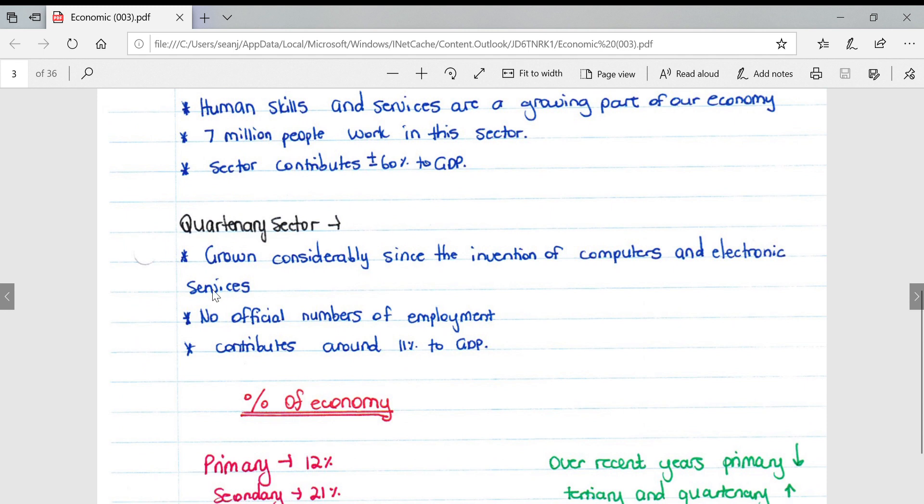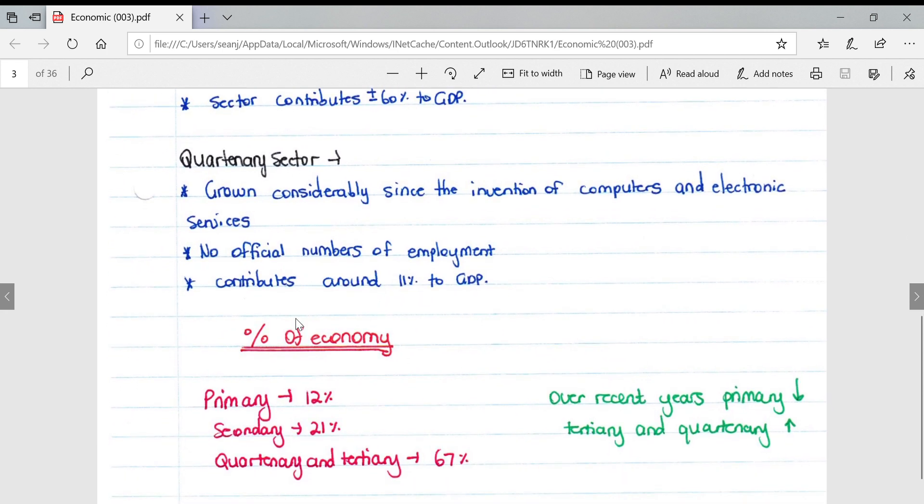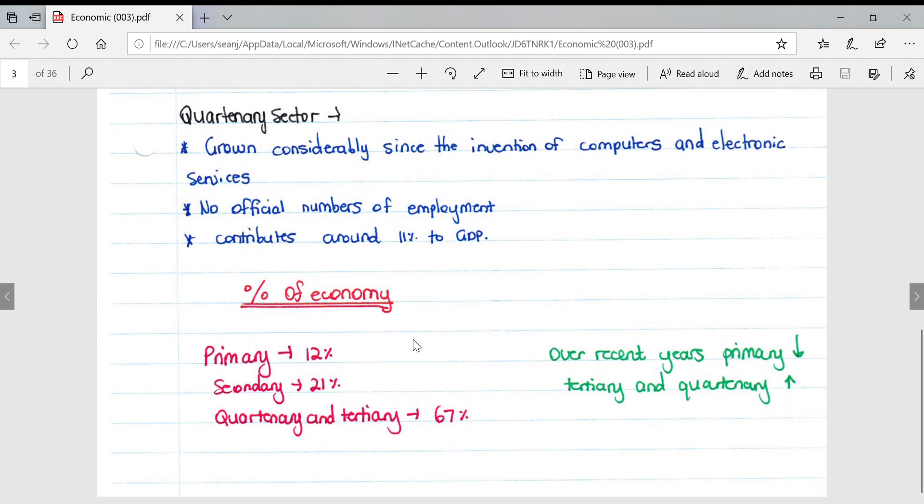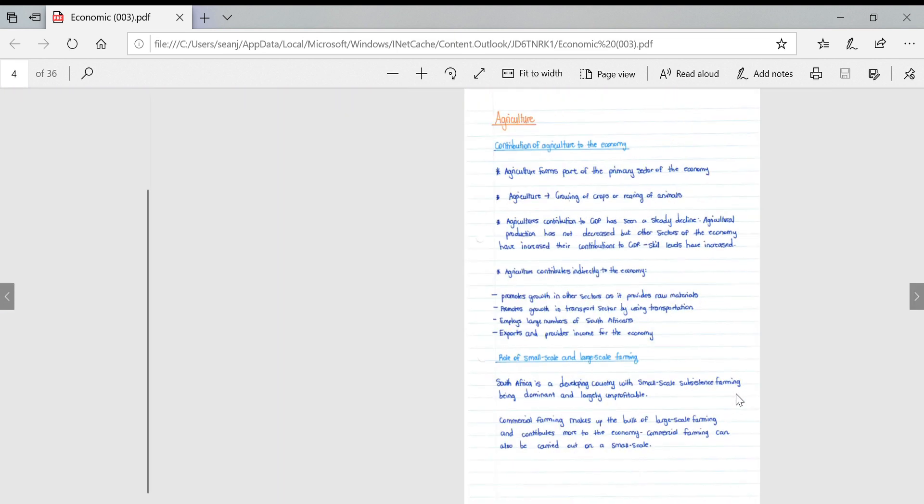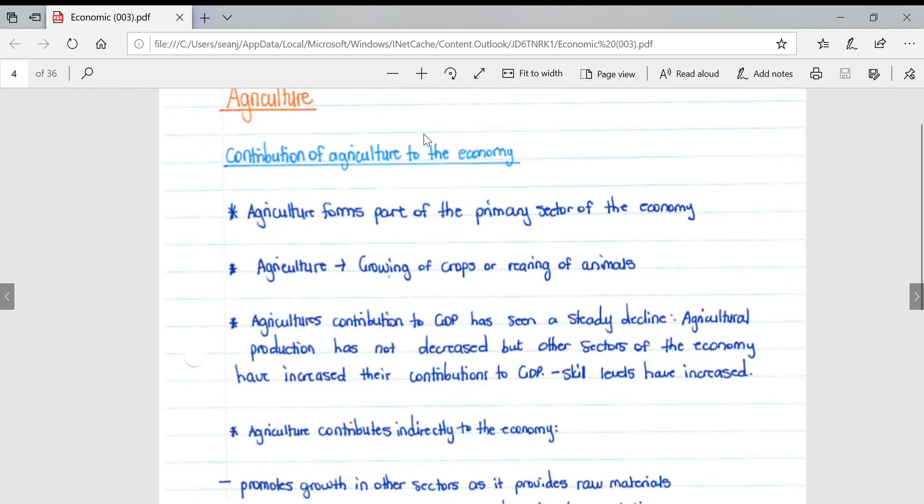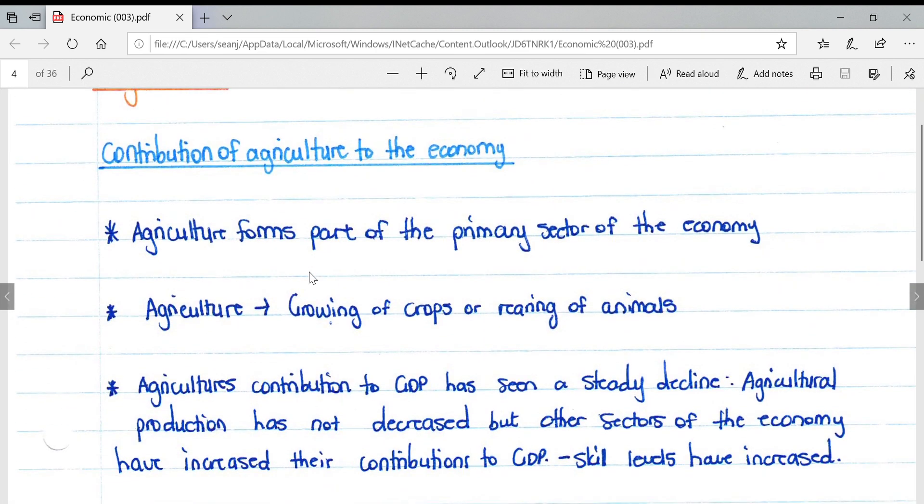The quaternary sector has grown considerably since the invention of computers and electronic services. There are no official numbers of employment, but it contributes around 11% to the GDP. The economy is divided into primary 12%, secondary 21%, and quaternary and tertiary make up 67%. Over recent years, the primary sector has decreased while the tertiary and quaternary sectors have increased.